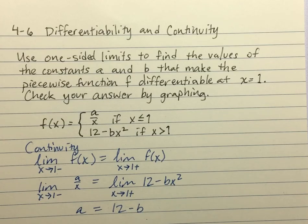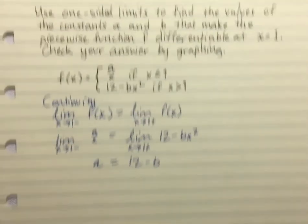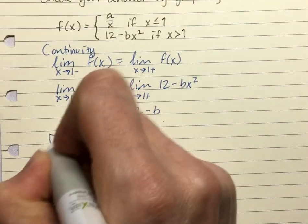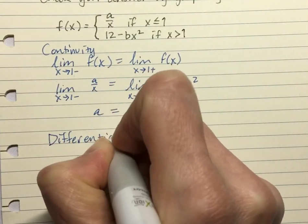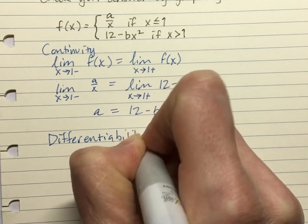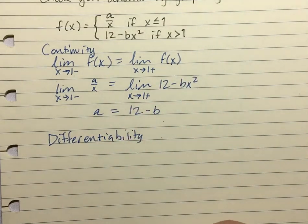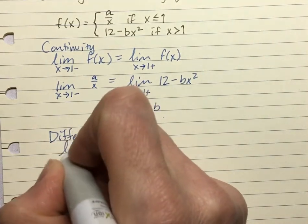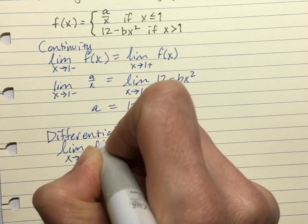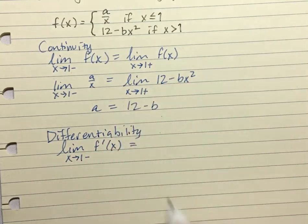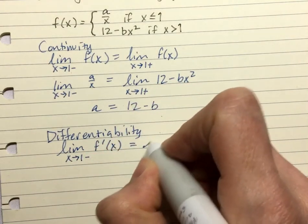So for the differentiability, that's our next piece. So just labeling this, differentiability, it's hard to spell if you're trying to think on the spot like this. So we need the limit as we approach 1 from the left of f prime of x, and then from the right as well.